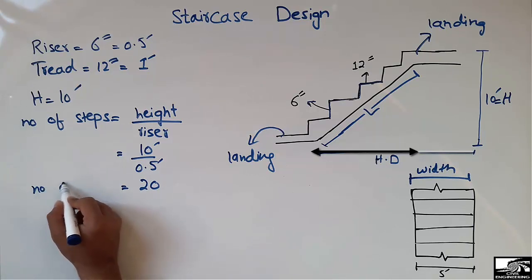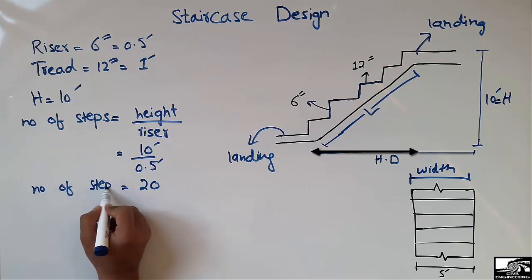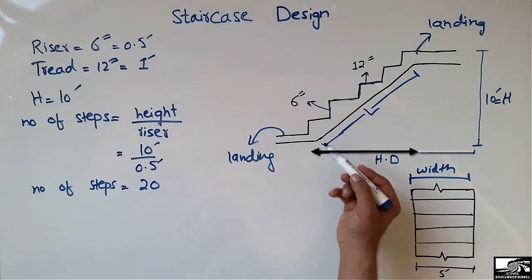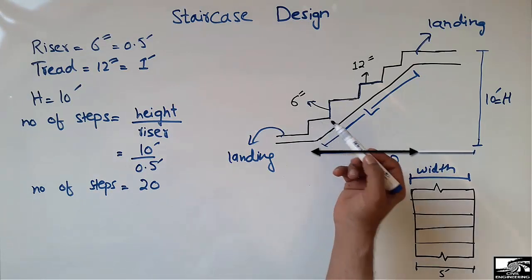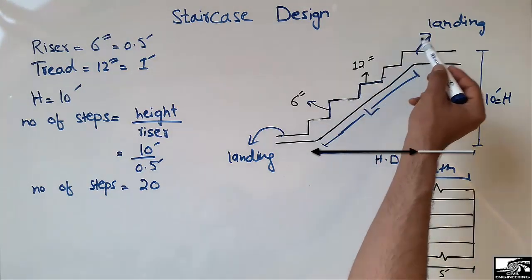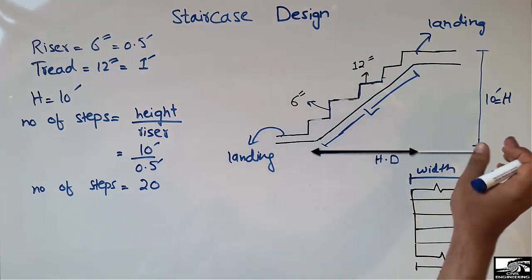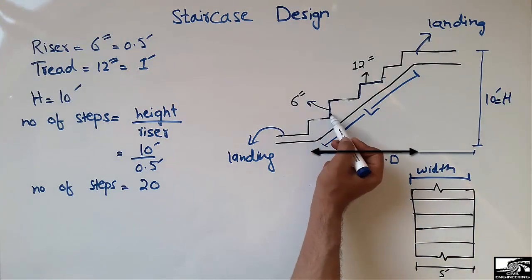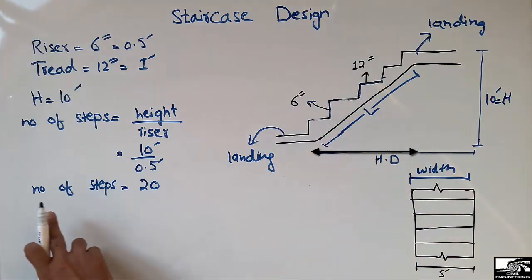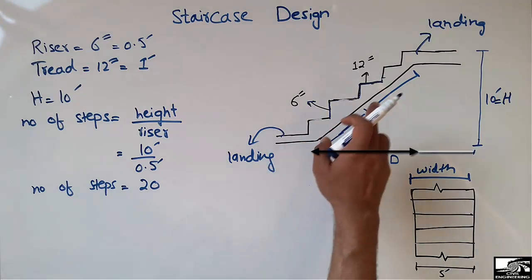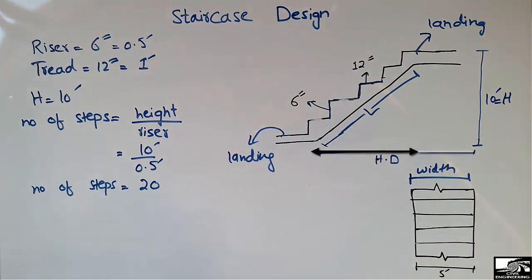So we get the total number of steps equal to 20. If we have a height of 10 feet and a riser of 6 inches, we need 20 steps in this staircase.